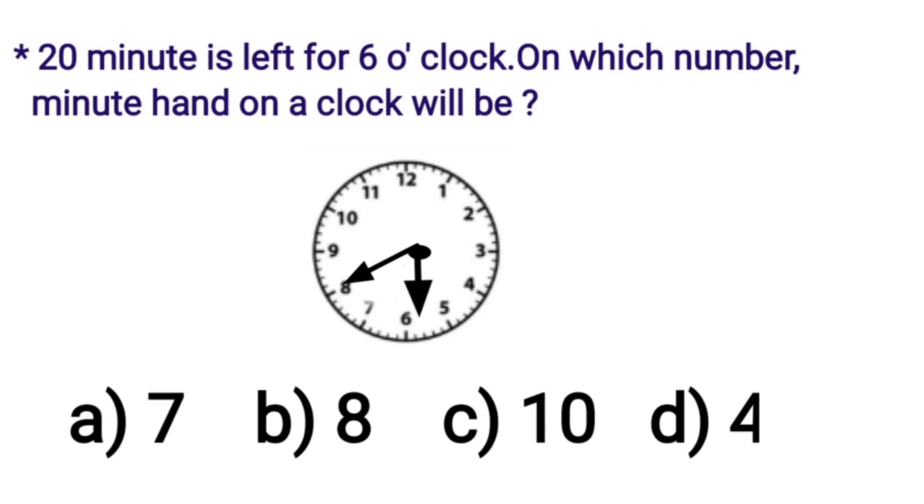So children, where is the long hand that we call the minute hand? It's at option A, that is 7. No. Option B, 8. Yes. So, children, option B is the correct option. So, let's put a tick here.